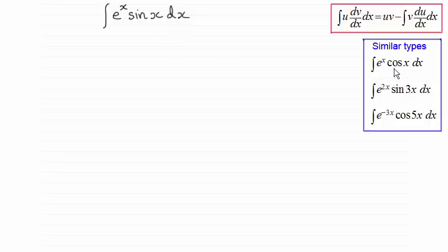This one we've got e to the x cosine x, and e to the 2x sine 3x, e to the minus 3x cosine 5x, and each of these are handled in exactly the same way. We use integration by parts, but we need to apply a special method as I'll show you in this example. It's exactly the same for all of these.